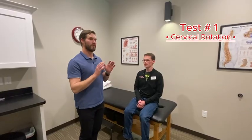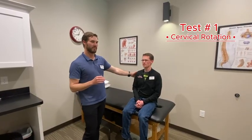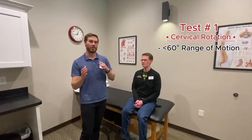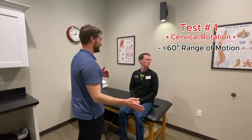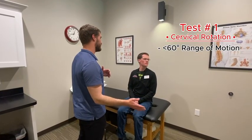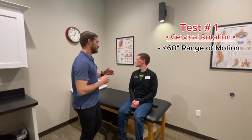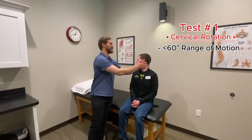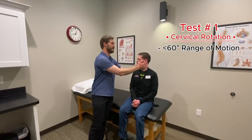The first thing we are going to look at is cervical spine rotation. We'll pretend Brandon has symptoms on the right side. We would be looking for a range of motion less than 60 degrees to the painful side. Brandon turned left and he's got full normal range of motion; turned to the right, and if he were to have a positive test, he'd have limited range of motion towards the painful side.